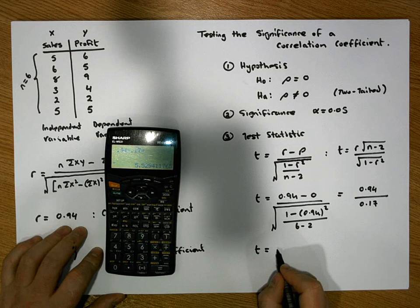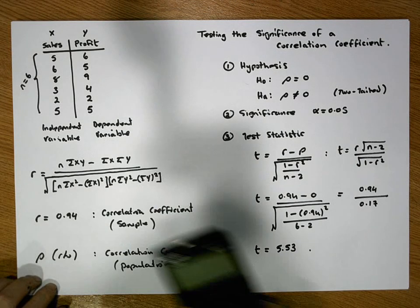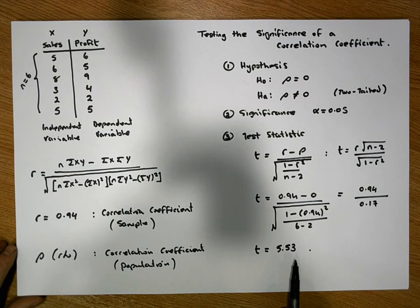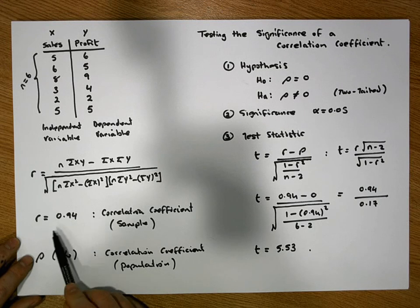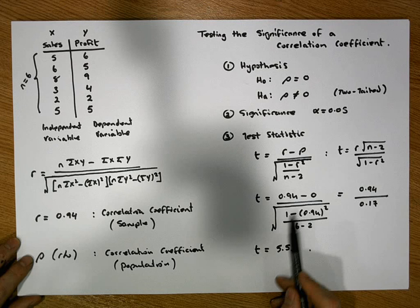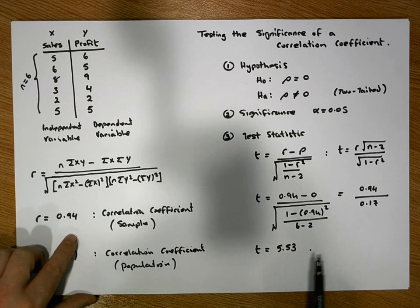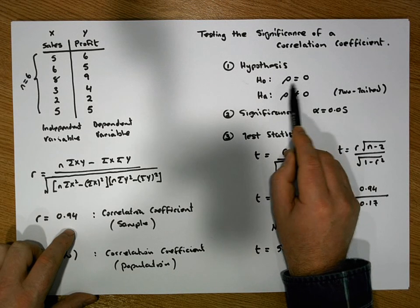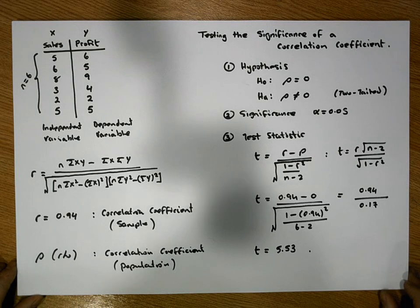This gives us a value of approximately 5.53. In standard units terms, our observed sample correlation coefficient of 0.94 is 5.53 standard units away from our hypothesized value of the population correlation coefficient.